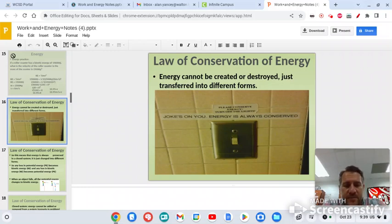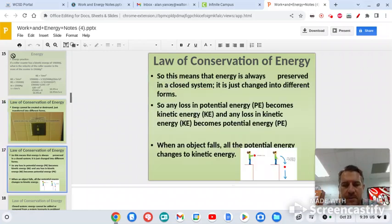So first we look at the law of conservation of energy. Remember, energy cannot be created or destroyed, it just transfers forms. And if you guys remember the simulation, potential and kinetic energy go like this. The amount of energy stays the same, they just change forms. So that means the energy is always preserved, and it just changes into potential or kinetic. So any loss of potential energy becomes kinetic energy. Any loss of kinetic energy becomes potential energy.